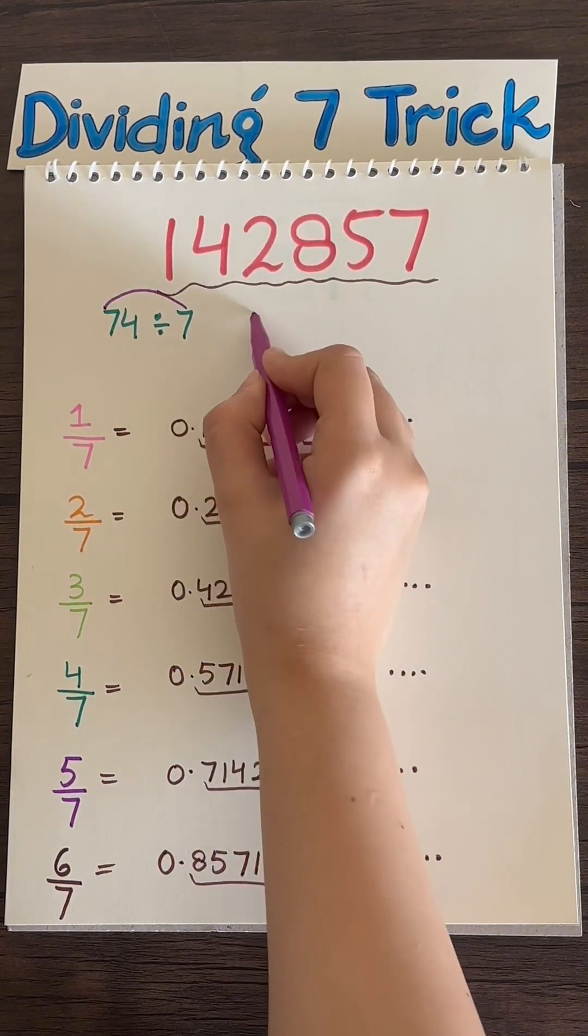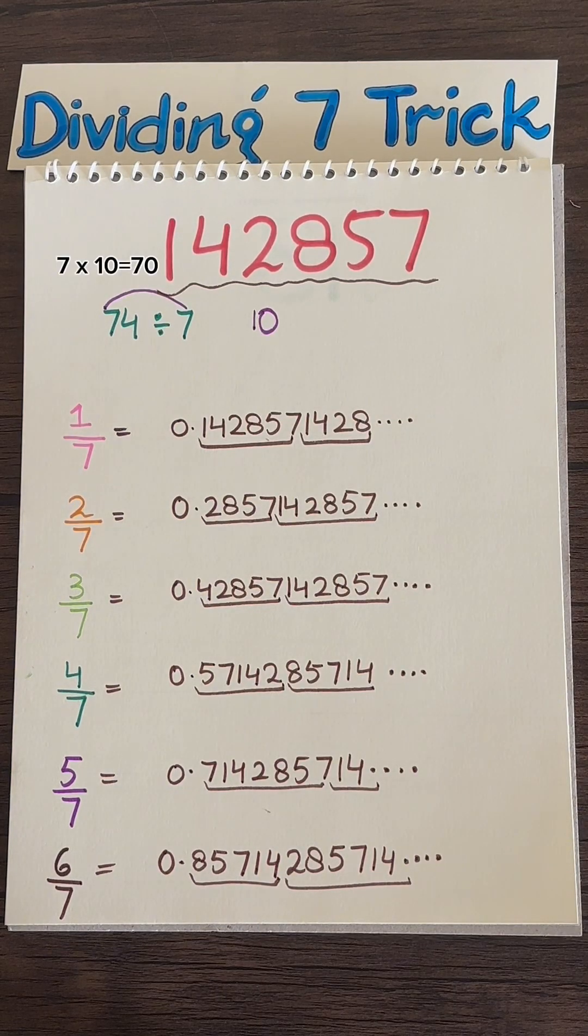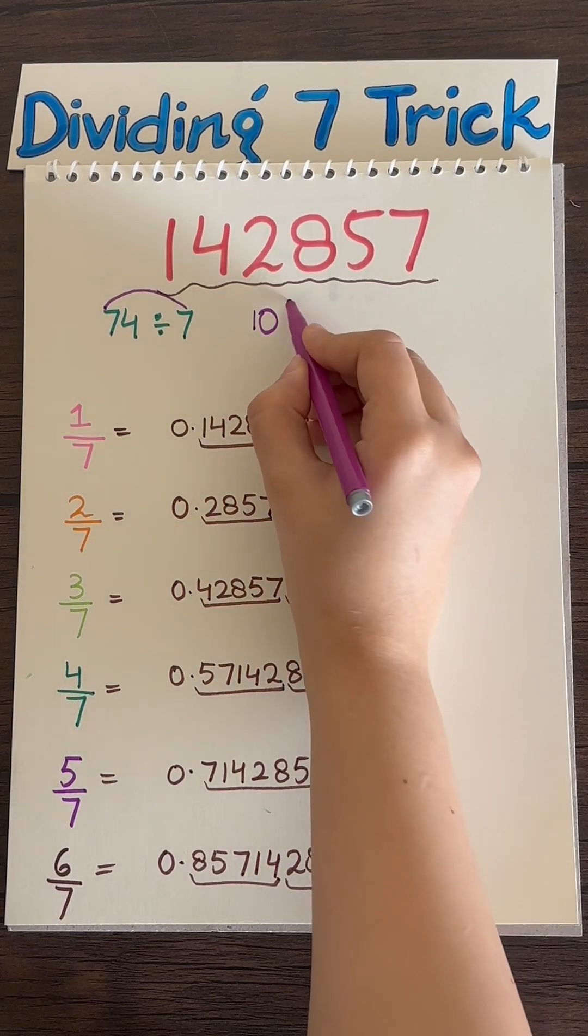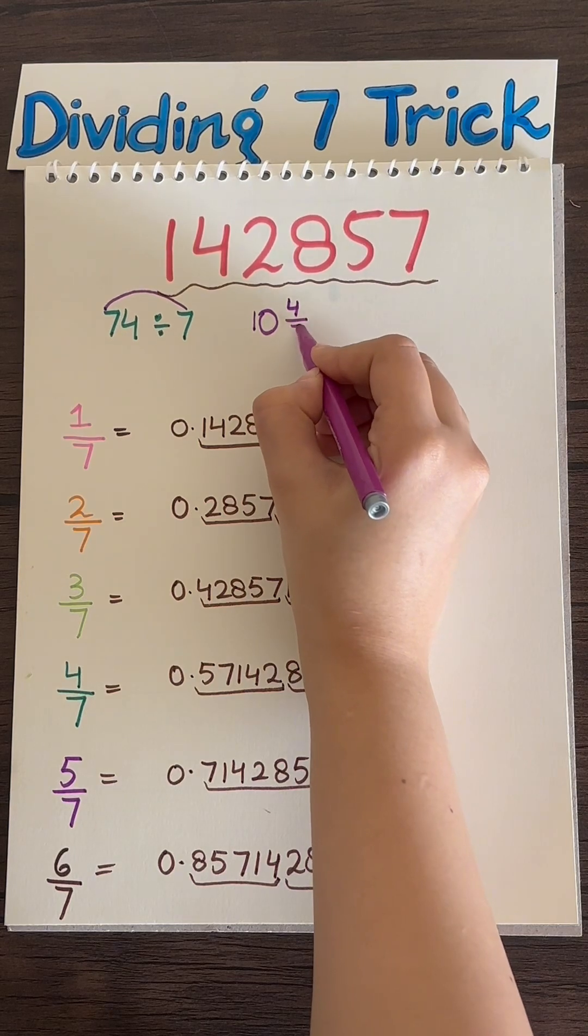Well, you know that 7 fits into 74 10 times, because 7 into 10 is 70, and we know we'll have a remainder of 4 over 7.